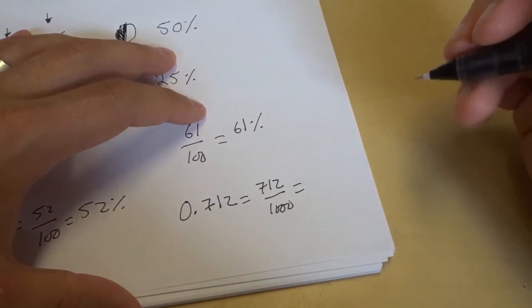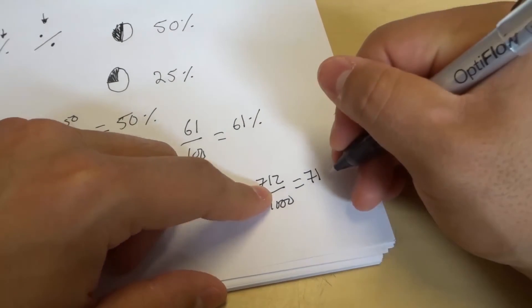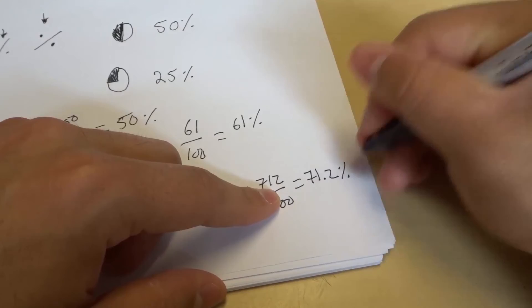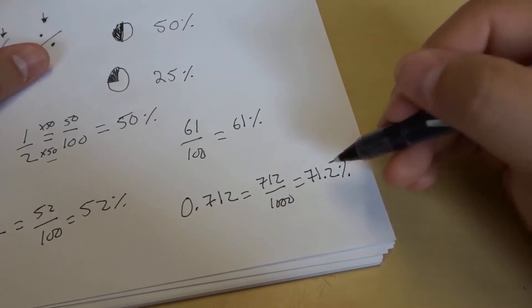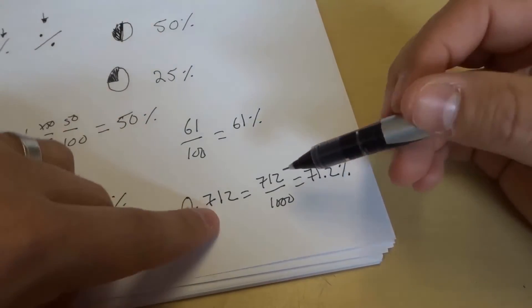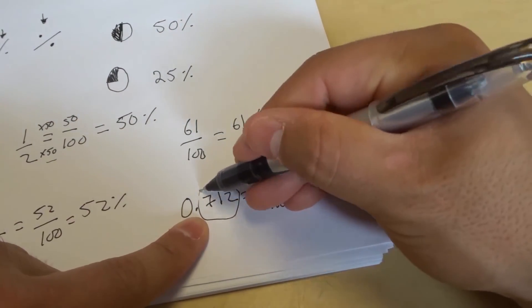And when you convert that to a percent, it's not 712%, it's 71.2%. Very simple, 71.2%. So you have to add that decimal right there before the percentage, if you are dealing with a number that has three digits after the decimal.